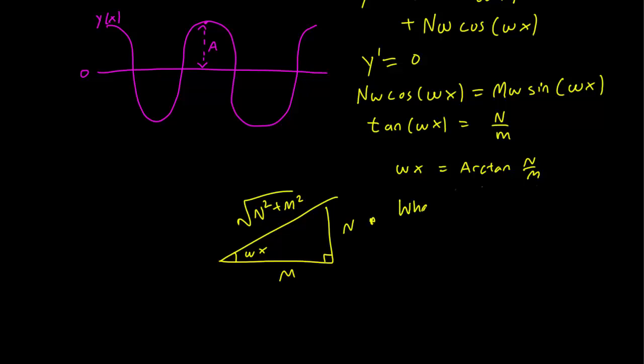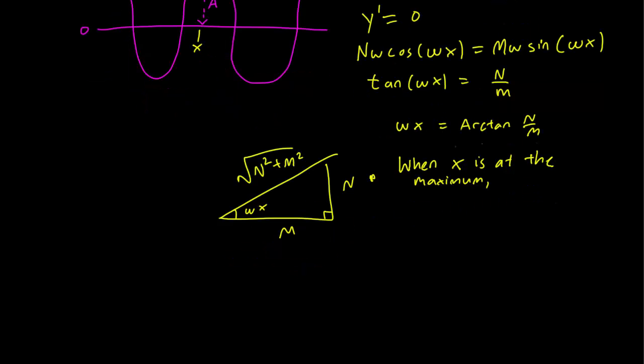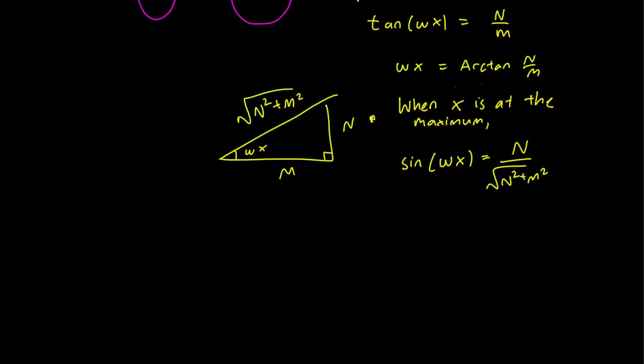This means when x is at the maximum, then sin(ωx) is going to be opposite over hypotenuse, N over √(N² + M²). And cos(ωx) is going to be M over √(N² + M²).